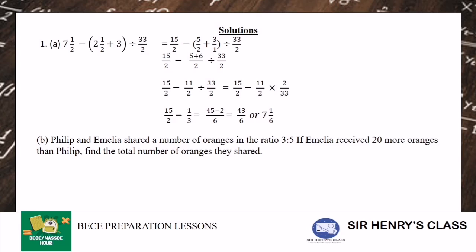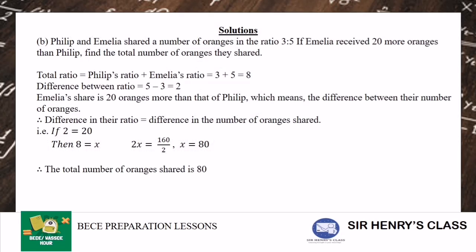Then in the second one, Philip and Emilia share a number of oranges in the ratio 3 to 5. If Emilia receive 20 more oranges than Philip, find the total number of oranges they shared. So here, the ratio is given. The difference between the oranges shared is 20. So you also find the difference between the ratio. That's 2. Correspond the 2 to the 20. The total ratio is 8. And then the answer is 80.